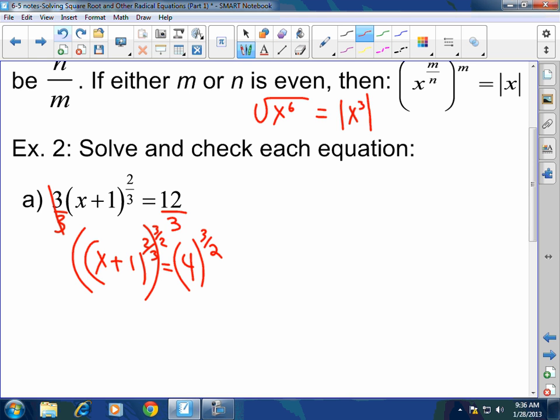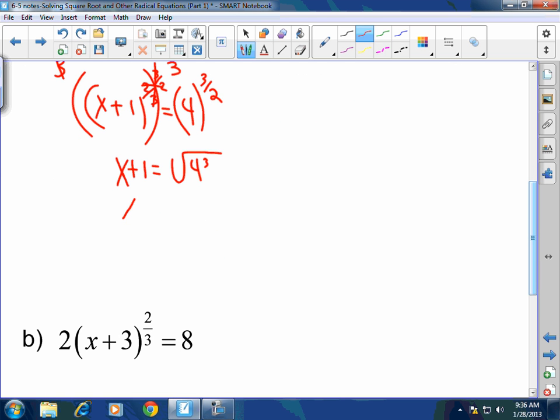So you're going to raise this whole thing to the 3 halves and you're going to raise this to the 3 halves. 2 thirds times 3 halves, guess what? They cancel. So now you have x plus 1 equals, this is Mickey Mouse, this is the square root of 4 cubed, right? And 4 cubed is 64. So x plus 1 equals the square root of 64. So x plus 1 equals 8 minus 1, boom, done, easy, x equals 7.